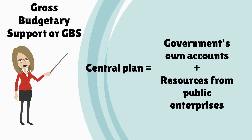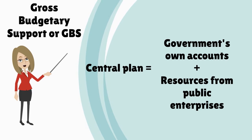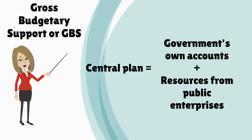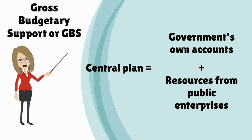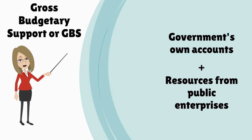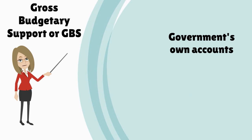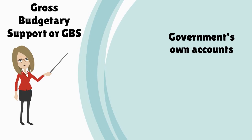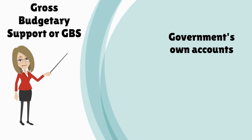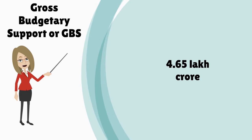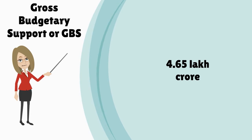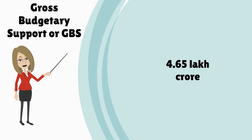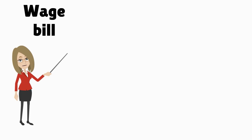The central plan is funded almost equally from the government's own accounts — the annual budget — and the resources that flow in from public enterprises. The government's support to the central plan is called the Gross Budgetary Support, or the GBS. The Gross Budgetary Support for 2015-16 is rupees 4.65 lakh crore.